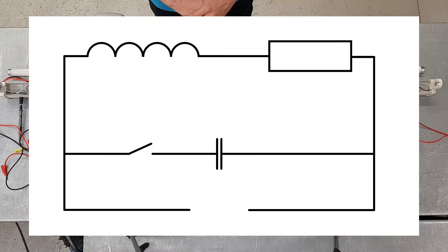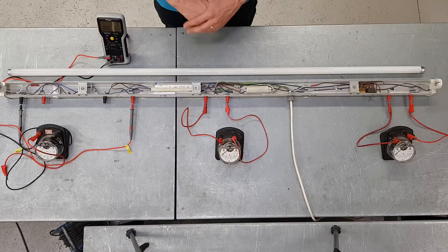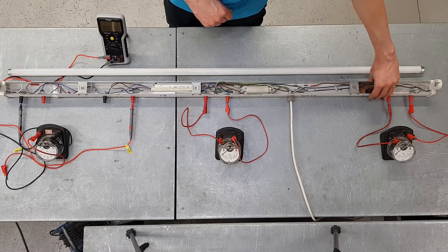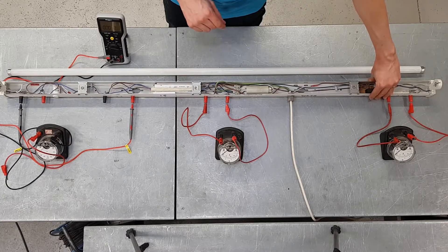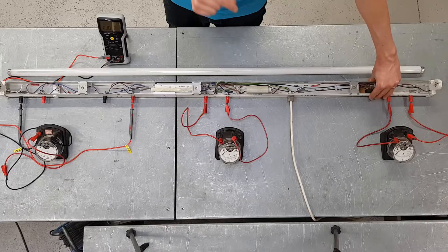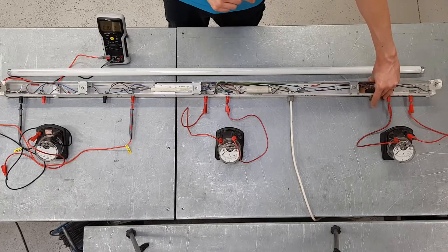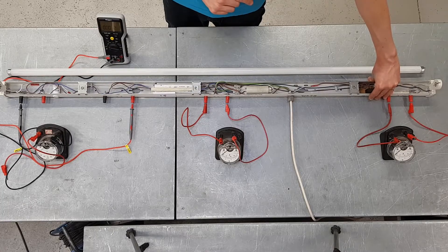The one item we wouldn't normally find on a fluorescent light fitting of this kind is this switch, which has been specially installed to control the power factor correction capacitor — connecting and disconnecting it. We wouldn't normally see that on a light fitting, but we're going to use it here for demonstration purposes.